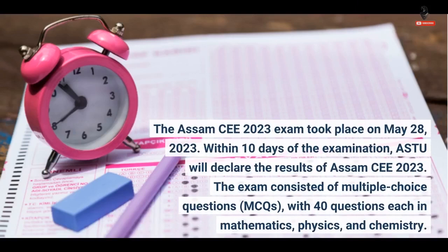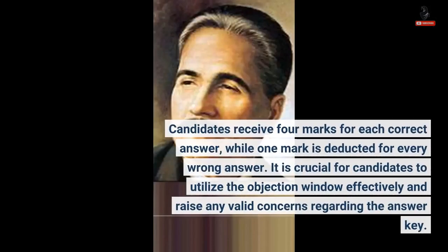The Assam CE 2023 exam took place on 28th May 2023. Within 10 days of the examination, ASTU will declare the results of Assam CE 2023. The exam consisted of multiple choice questions (MCQs), with 40 questions each in mathematics, physics, and chemistry. Candidates receive four marks for each correct answer, while one mark is deducted for every wrong answer.